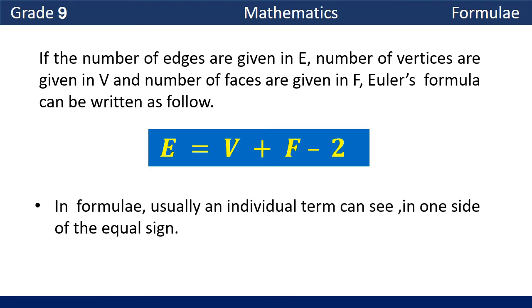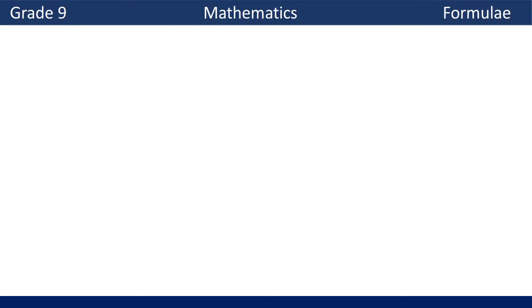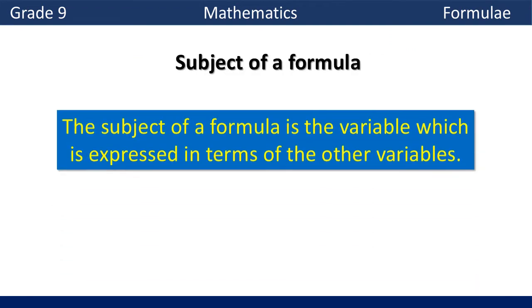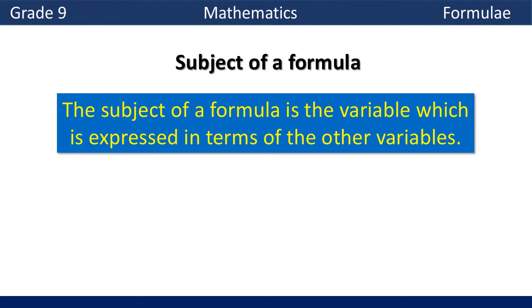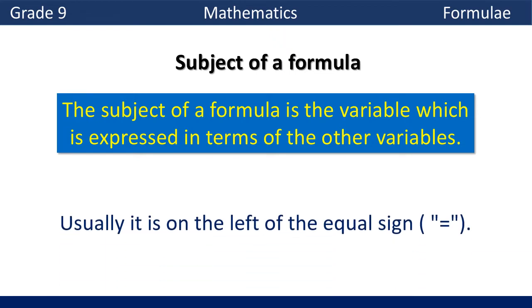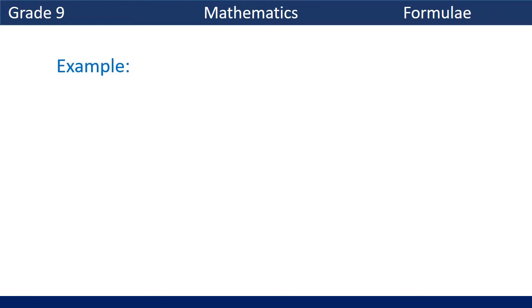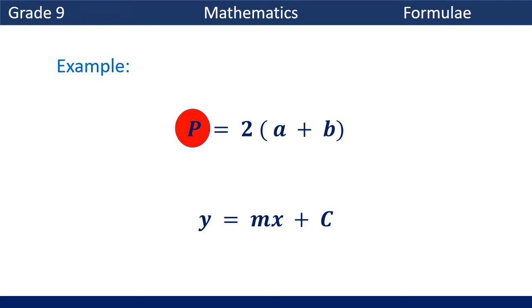In formulae, usually an individual variable can be seen on one side of the equal sign. Let's identify the subject of a formula. The subject of a formula is the variable which is expressed in terms of the other variables, and it is usually on the left side of the equal sign. For example, in the formula P equals 2 times (A plus B), the subject is P. Also, in the formula Y equals MX plus C, the subject is Y.